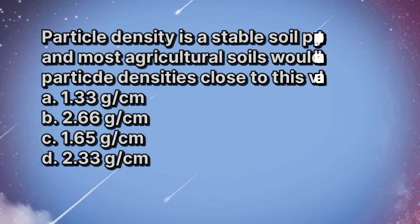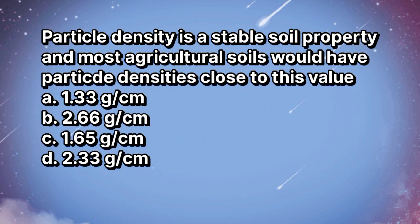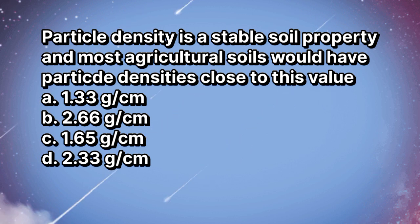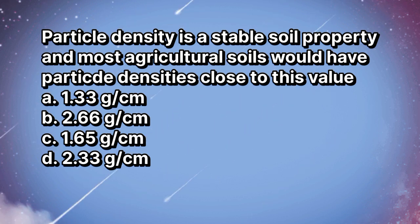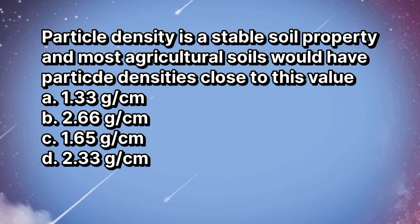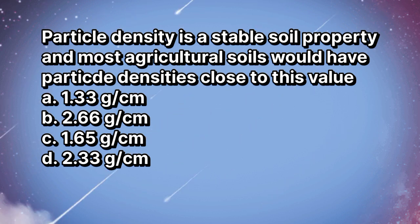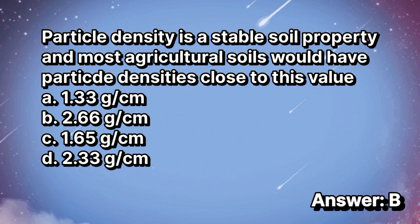Particle density is a stable soil property, and most agricultural soils would have particle densities close to this value. A. 1.33 g/cm³. B. 2.66 g/cm³. C. 1.65 g/cm³. D. 2.33 g/cm³. The answer is letter B.